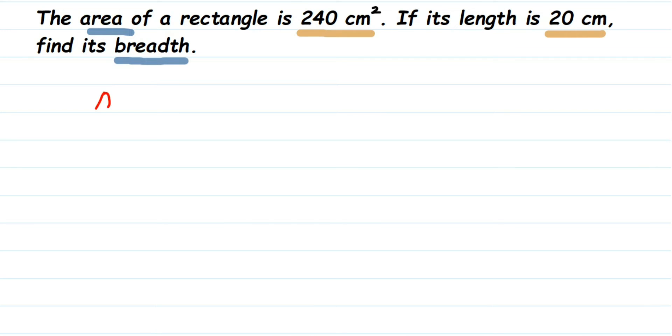So area of rectangle is equal to 240 cm square. And we also know the length, so I am writing L. L stands for length. L is equal to 20 cm. And here we have to find out the breadth. The breadth is unknown to us.